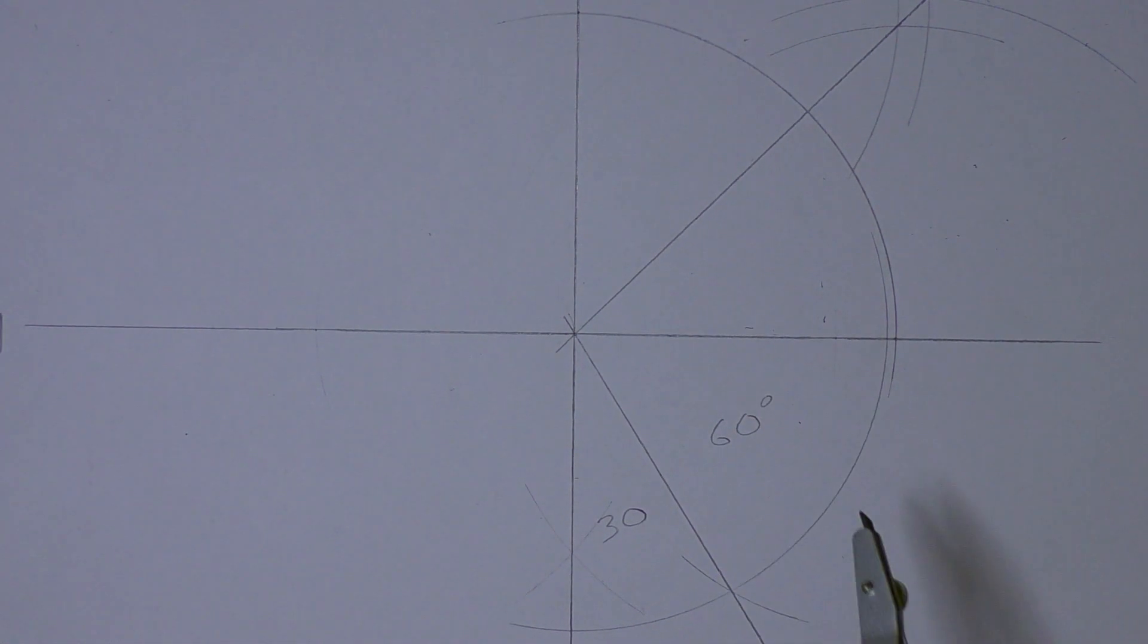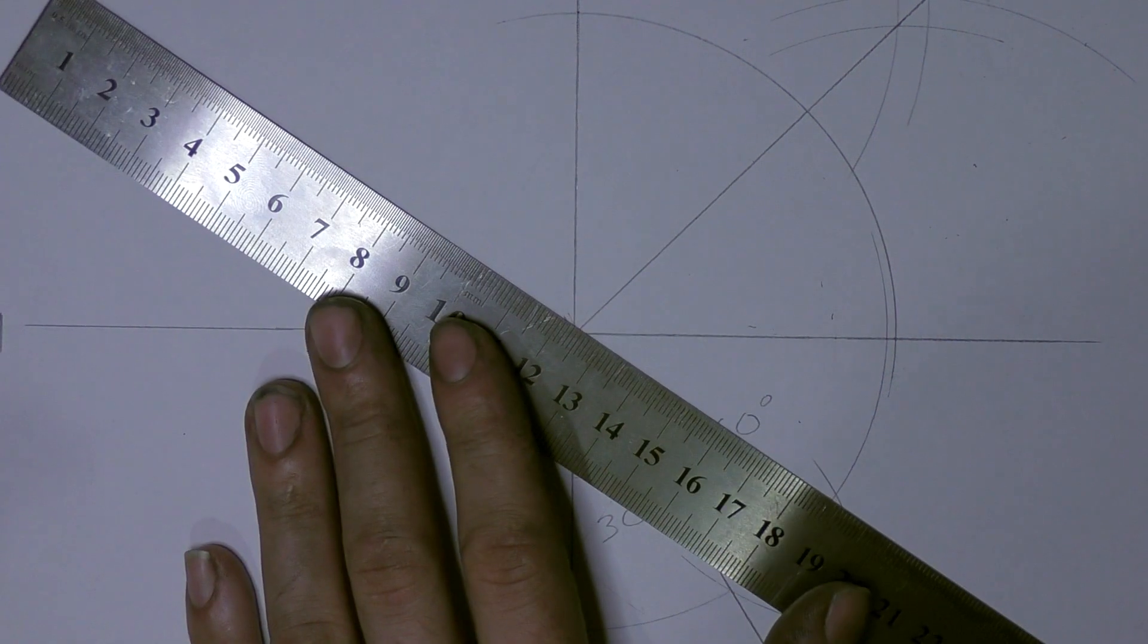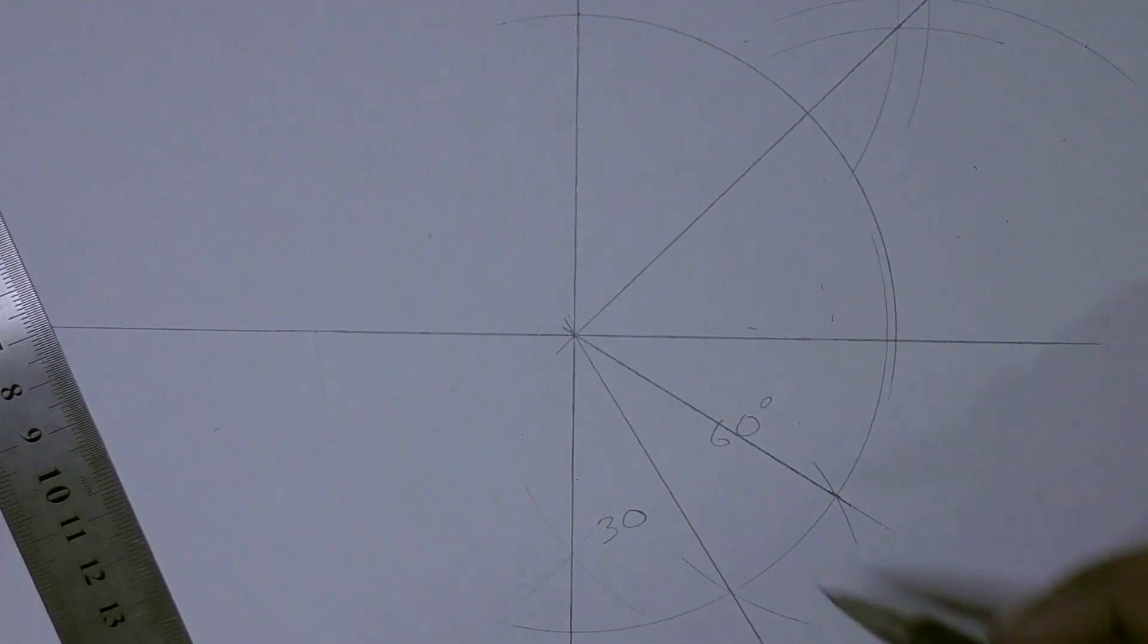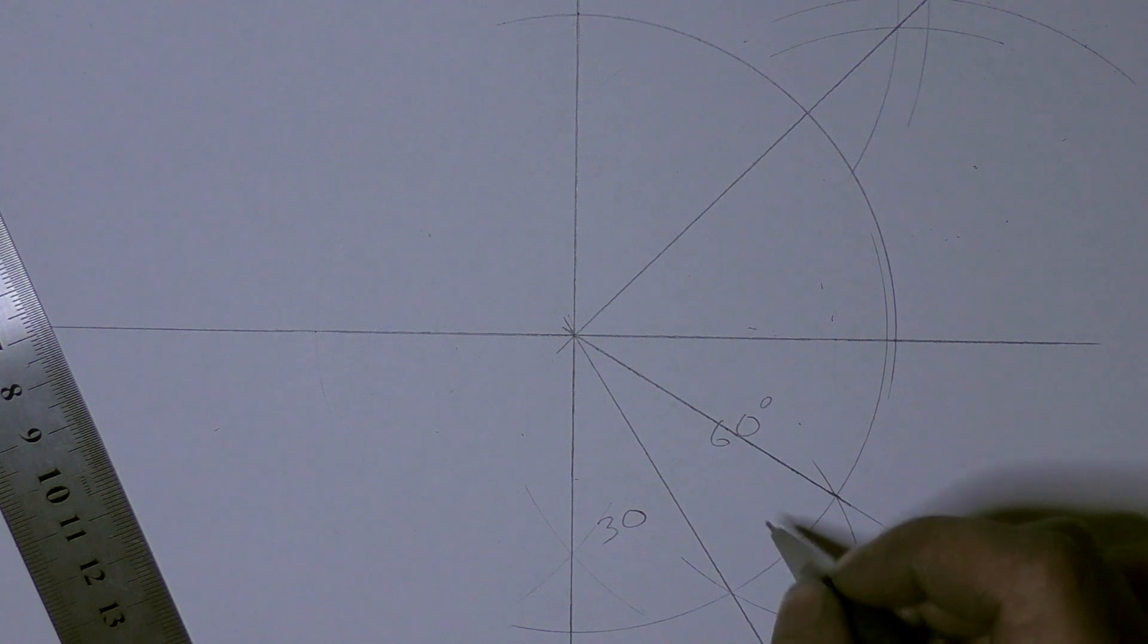And if we want to, we can also cut this again from the other side. And now we have three portions that are 30 degrees.